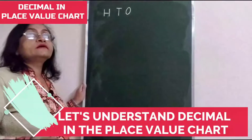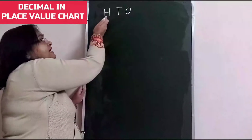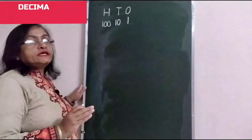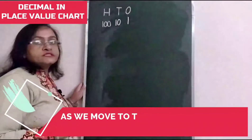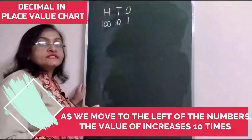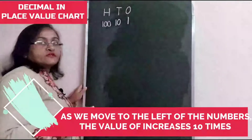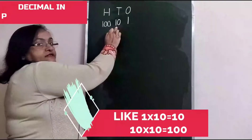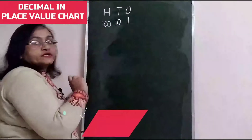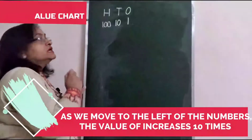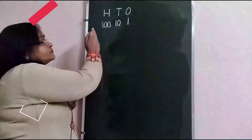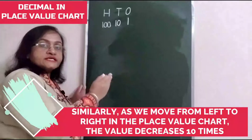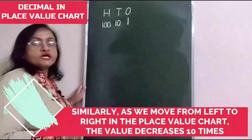Now let's understand decimal in the place value chart. This is ones place, this is tens place, and this is hundreds place. As we move to the left of the numbers, the value of the digit increases ten times. As we move from left to right in the place value chart, the value decreases ten times.